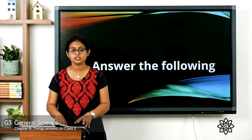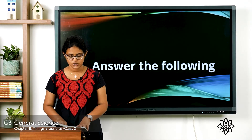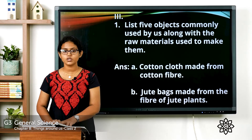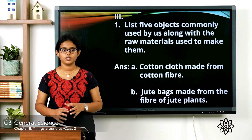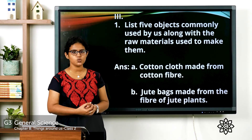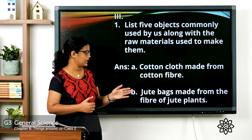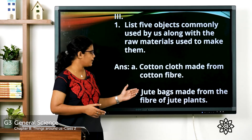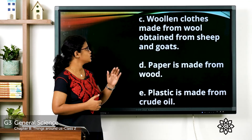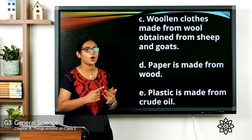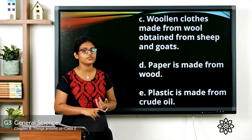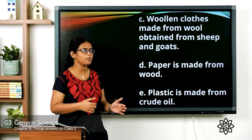Next: answer the following questions in two or three sentences. Question one — list five objects commonly used by us along with the raw materials used to make them. Cotton cloth is made from cotton fiber. Jute bags are made from the fiber of jute plants. Woolen clothes are made from wool obtained from sheep and goats. Paper is made from wood. Plastic is made from crude oil.